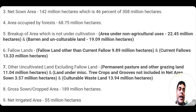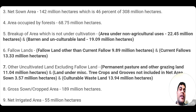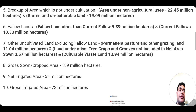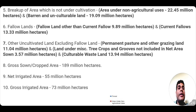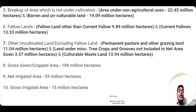Then comes the seventh category: other uncultivated land excluding fallow land. The first type is permanent pasture and other grazing land, which is 11.04 million hectares. Then comes land under miscellaneous tree crops and groves not included in net zone area, which is 3.57 million hectares. Then comes culturable wasteland, comprising 13.94 million hectares.